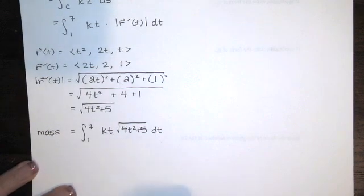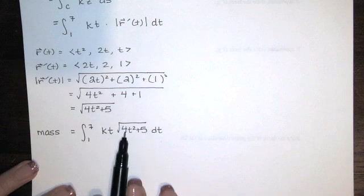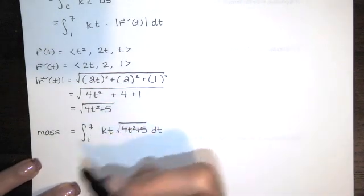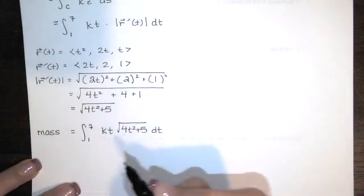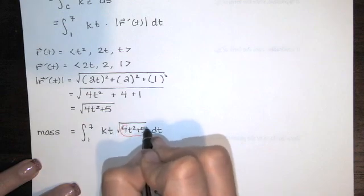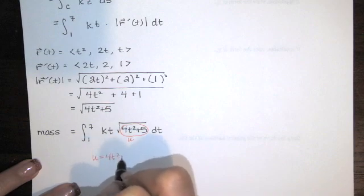Well, first of all, K is just a constant, so we could factor that out. And I notice I've got a product. I've got T times this square root function. Now, since I have a function nested inside another function, I think to myself, U substitution is probably a good choice. If U substitution works, U is usually a function nested inside another function. So I would guess that U is equal to that inside function there, 4T squared plus 5.